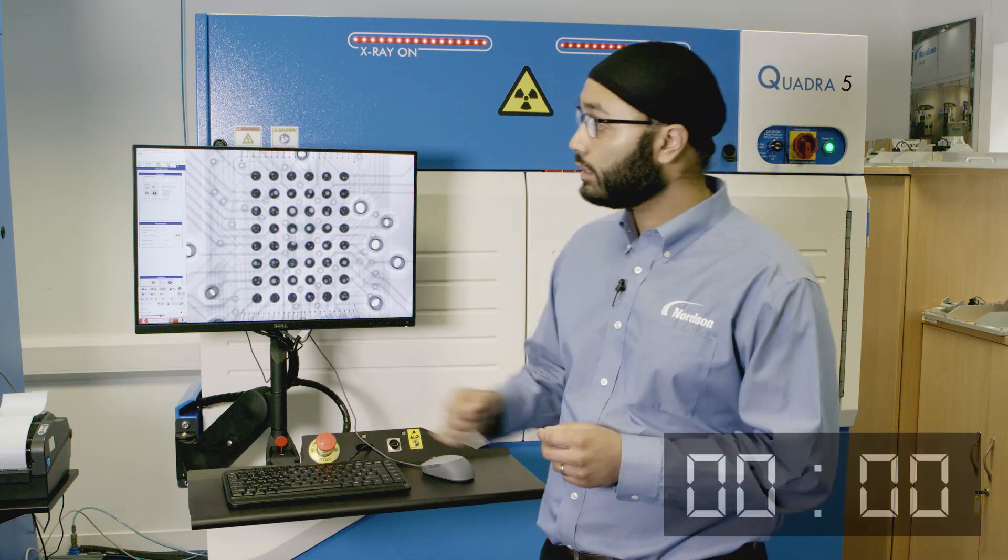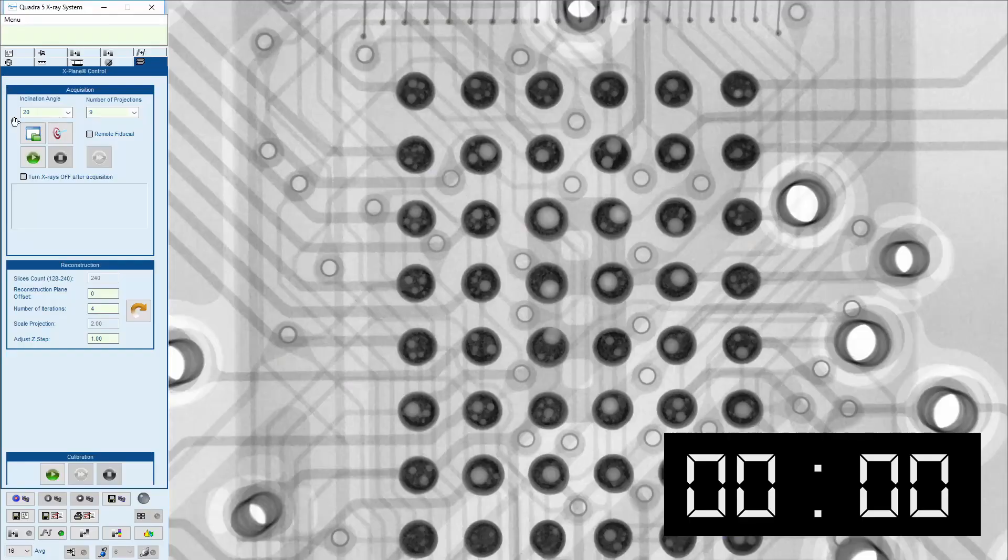Now I'm going to demonstrate our super fast x-plane scans. Here's how you can achieve good x-plane results in less than one minute. Select 9 projections and 16 average. Start the clock.